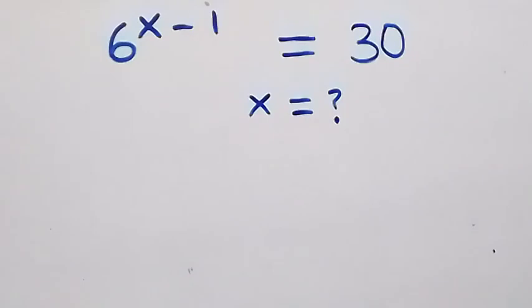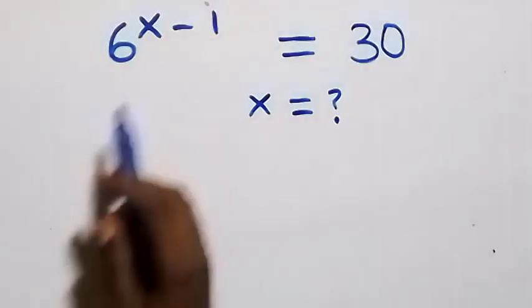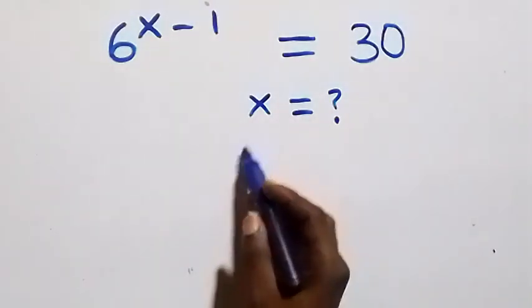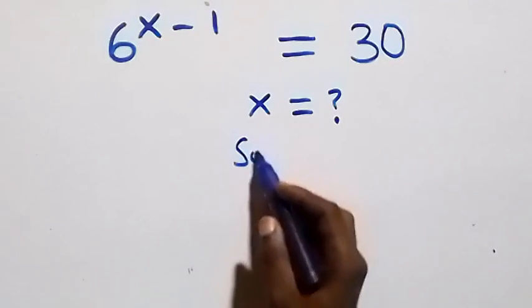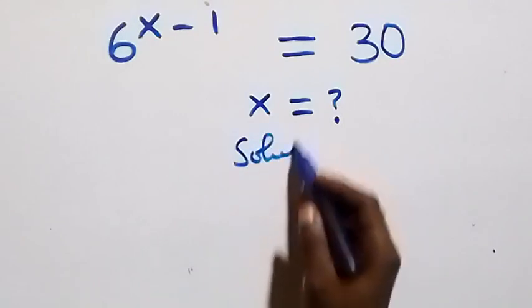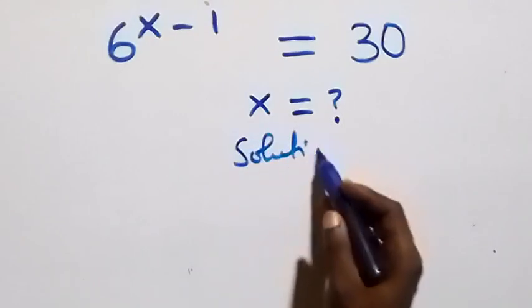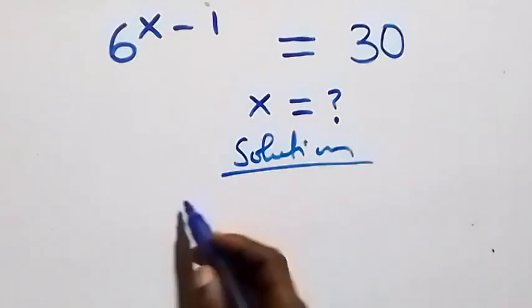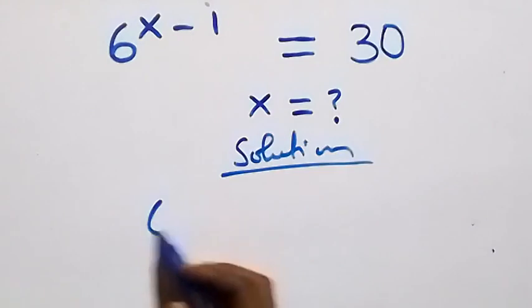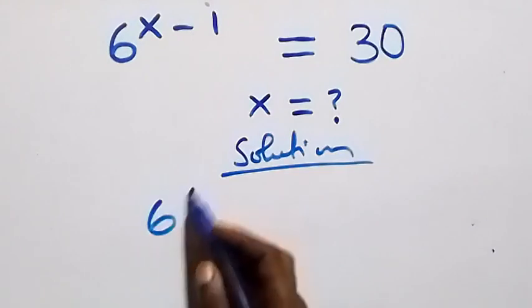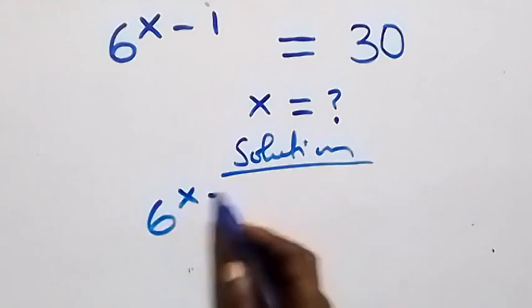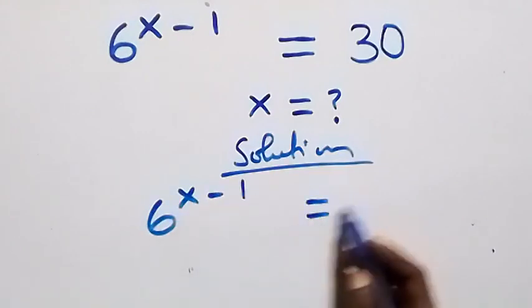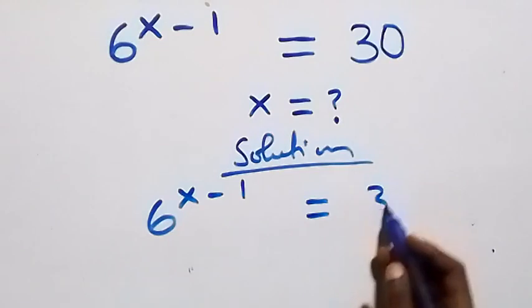Hello, you're welcome. How to solve this nice exponential equation. From what we are given here, which is 6 raised to the power x minus 1 equals 30.